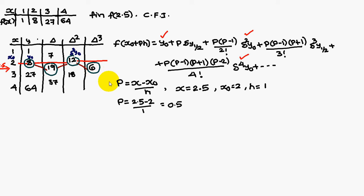So therefore, p equals x minus x0, x is 2.5, x0 is 2, h is equal to 1, the difference between these x values. Therefore p is 0.5, and y0 is 8, and this delta y half, delta square y0, delta cube y half.